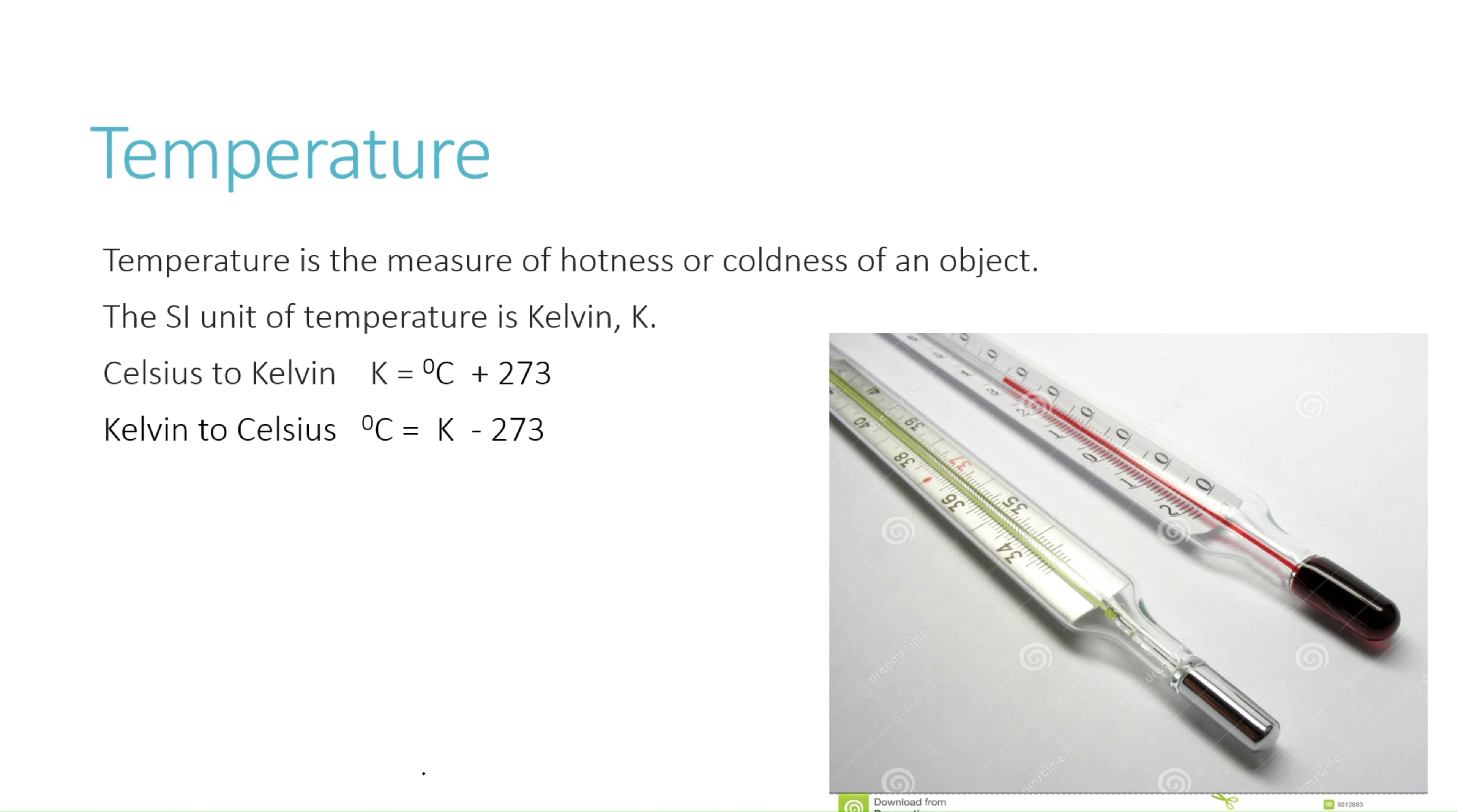Temperature is the measure of hotness or coldness of an object. The SI unit of temperature is kelvin, but commonly we also use degree Celsius. In order to convert 25 degree Celsius into kelvin, we can get the temperature in kelvin if we take the temperature that's given in Celsius scale and add that value with 273. So your answer will be 25 plus 273, the answer would be 298 kelvin.